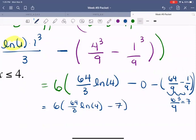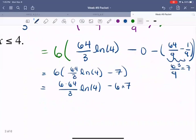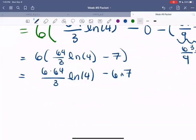Now we're going to multiply 6 throughout. 6 times 64 over 3 ln of 4 minus 6 times 7.